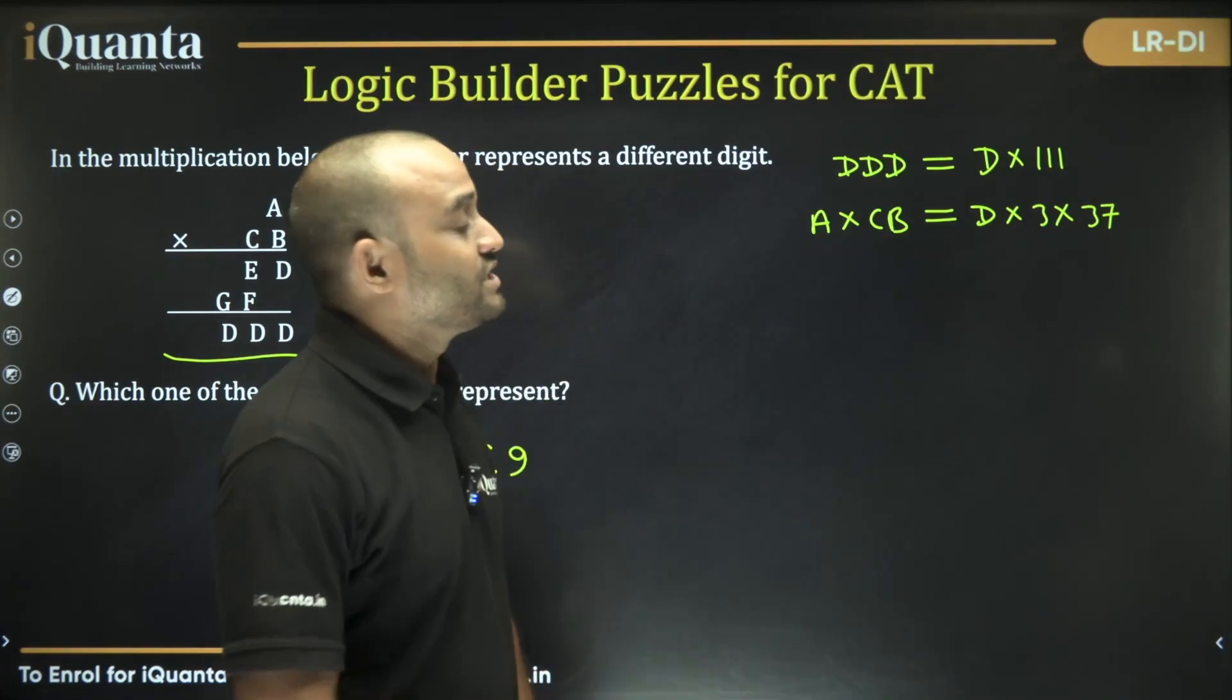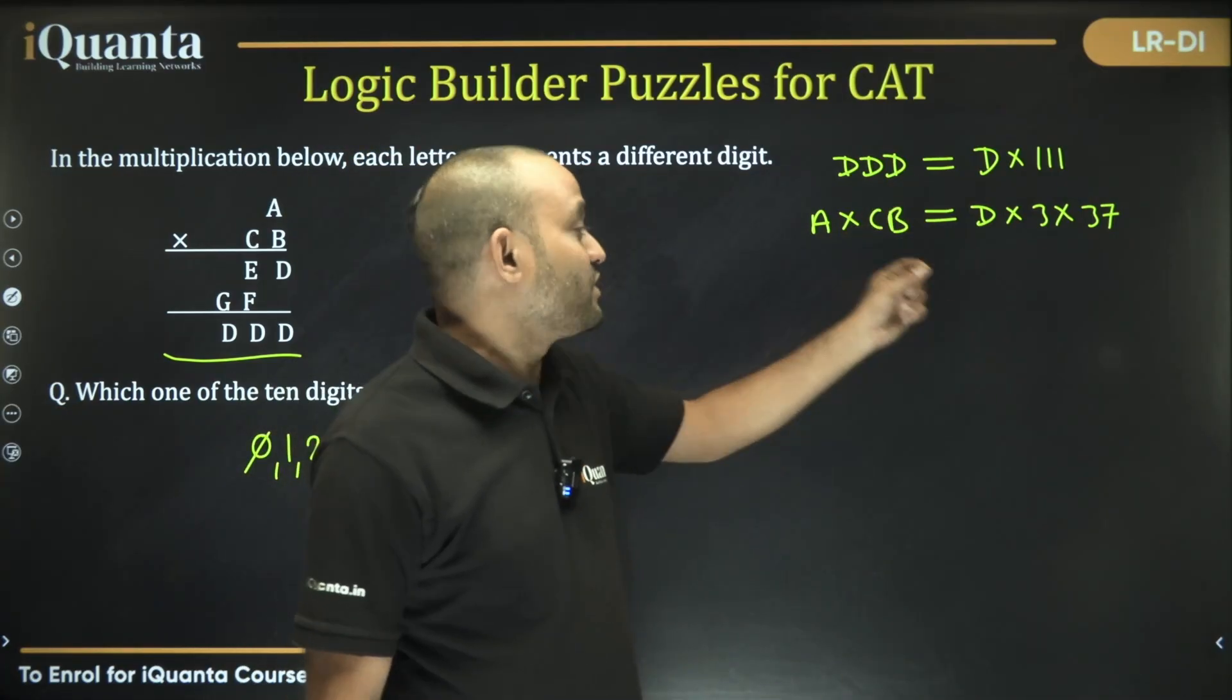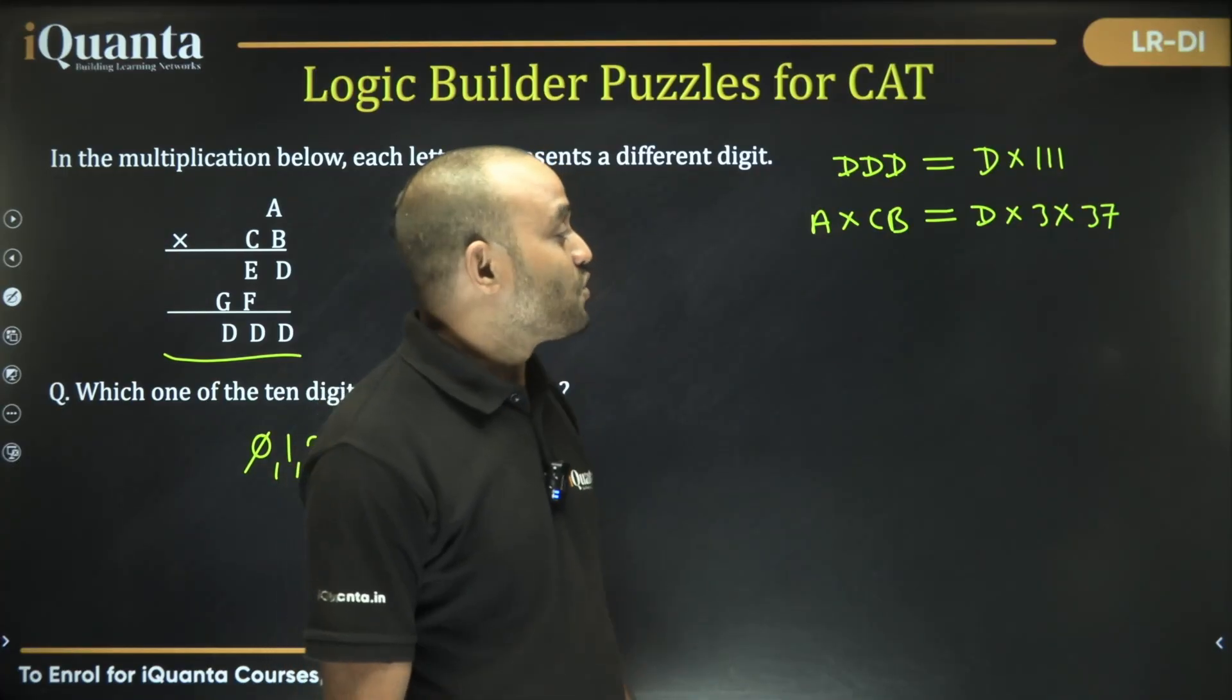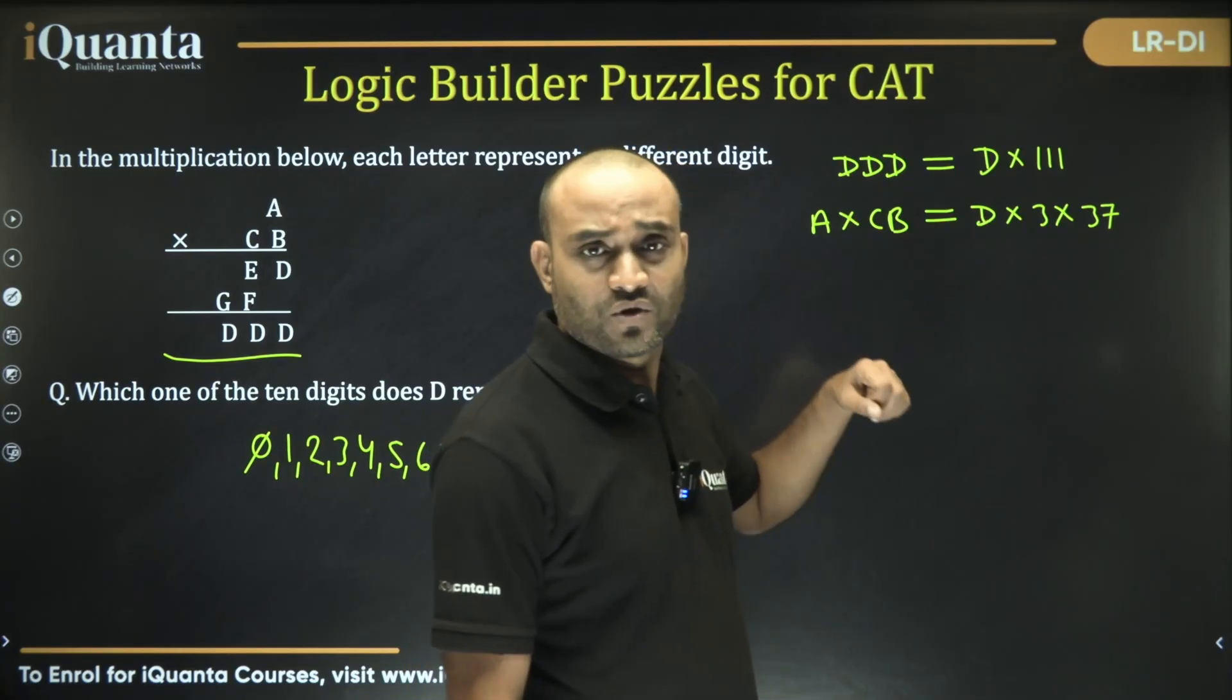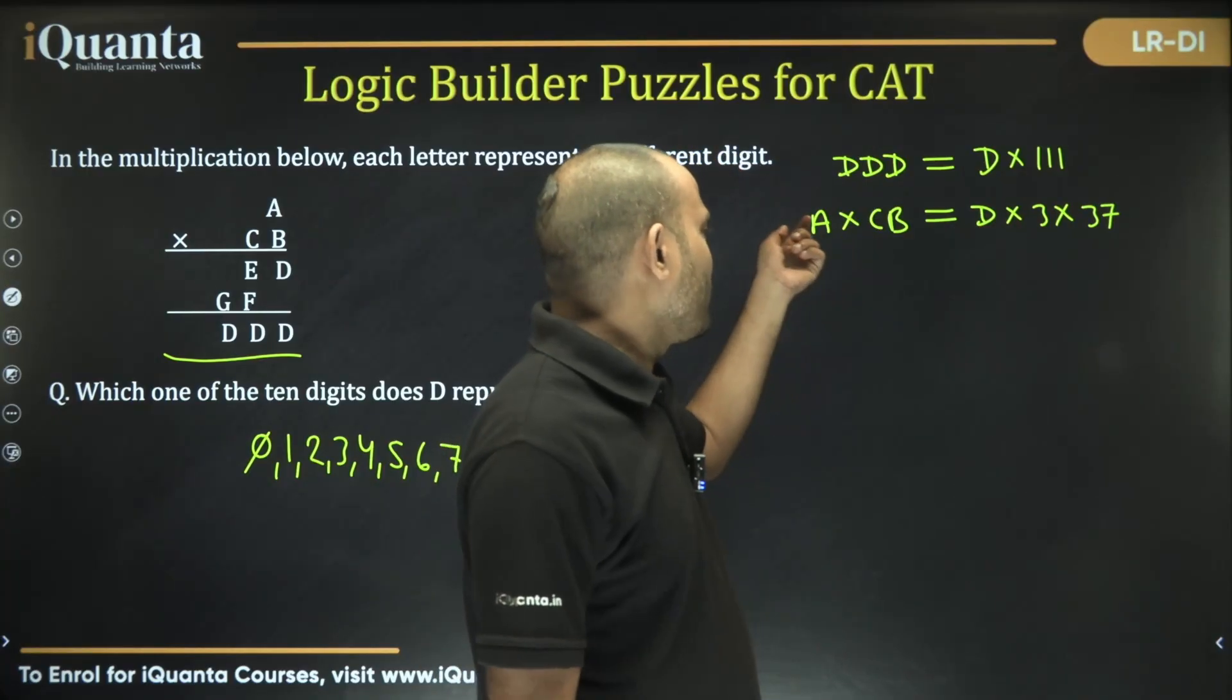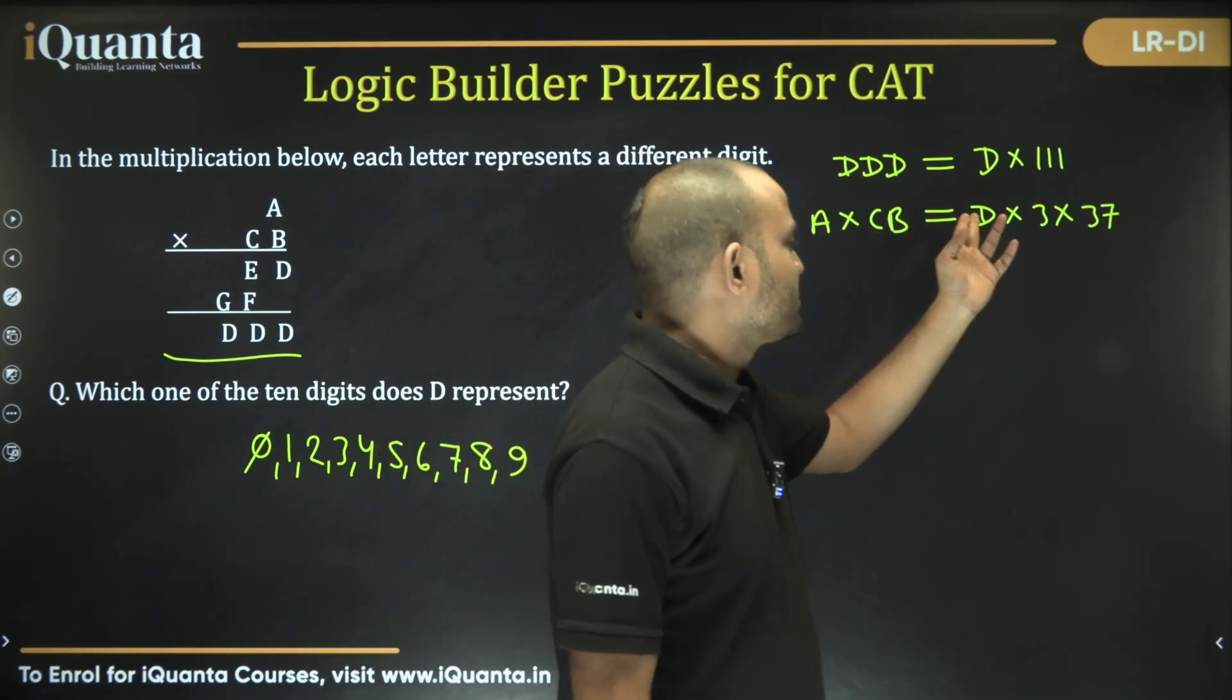Now remember this product is because of A into CB. A into CB is equal to D into 3 into 37, means one of the numbers should be a two-digit number, one of the numbers should be a single-digit number. So what should be the value of D here? If we start with taking D is equal to 9, if you put D is equal to 9, then 9 into 3 will become 27. So we won't get one number as two-digit, one number as single-digit.